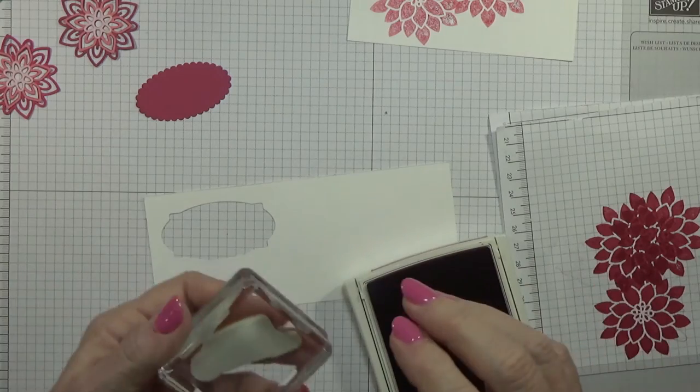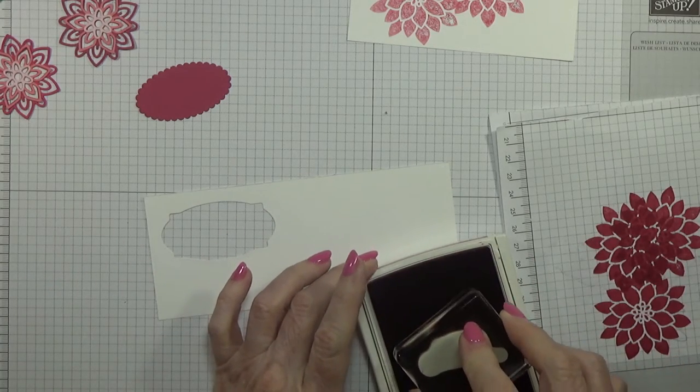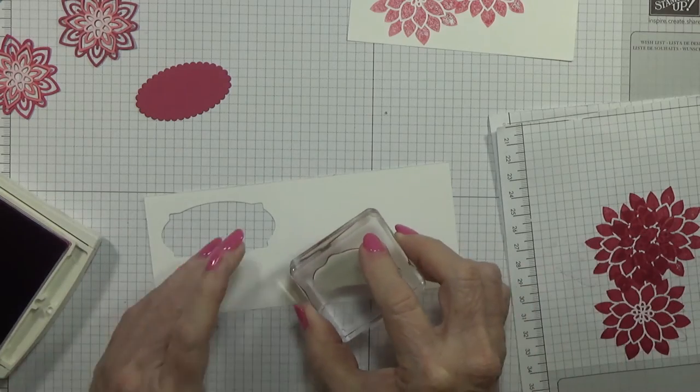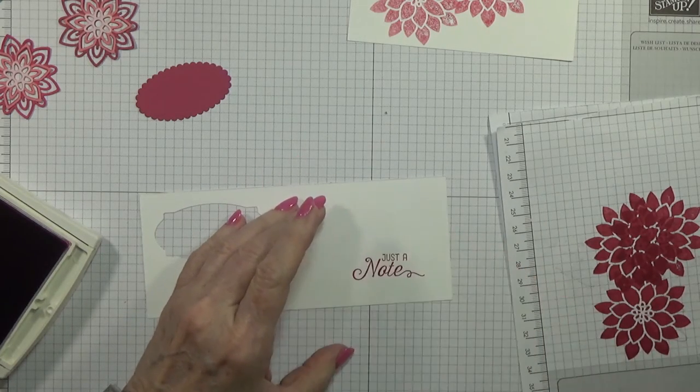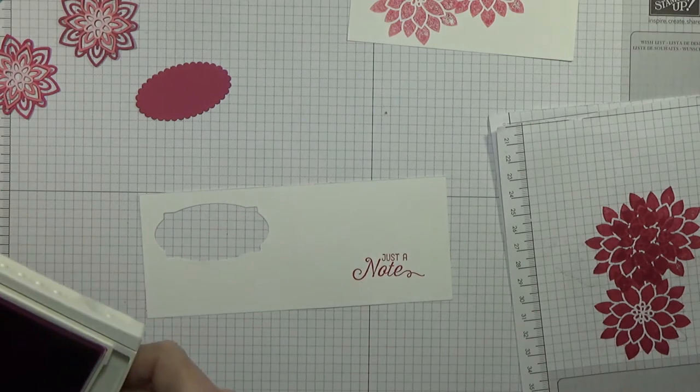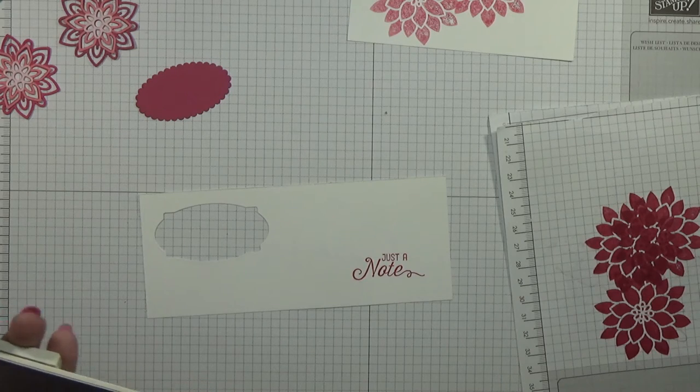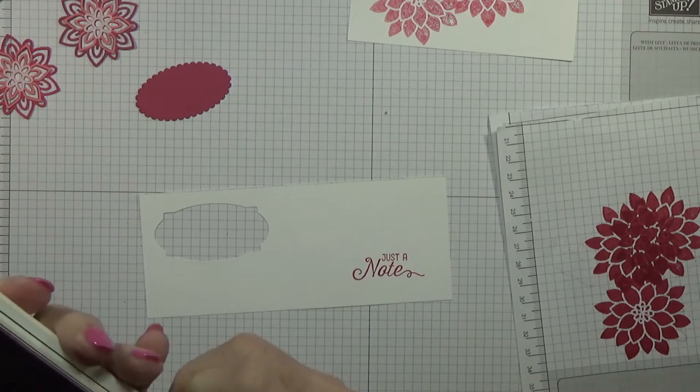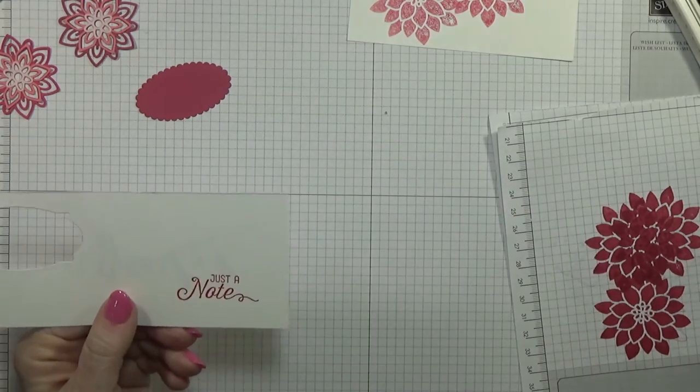Let's go ahead and stamp the sentiment. This is Just a Note and I'm going to stamp it right over here. I forgot I need to sponge it, so I'm going to go ahead and cut this out right quick. I will be right back with you.